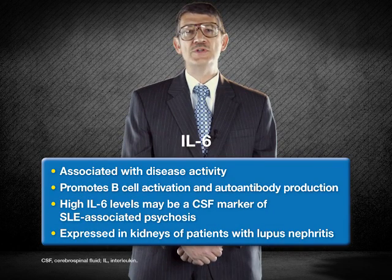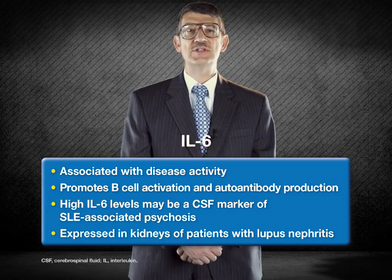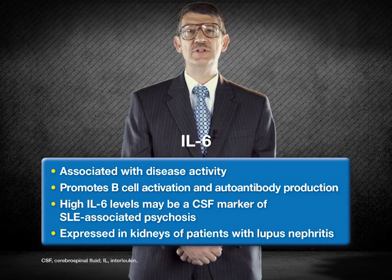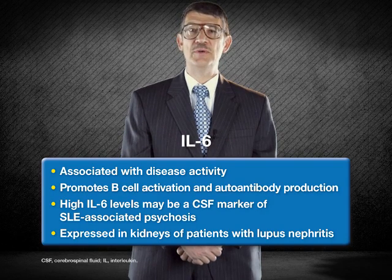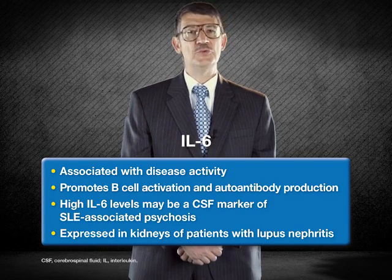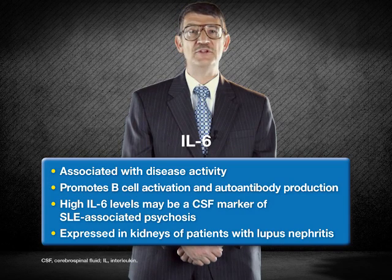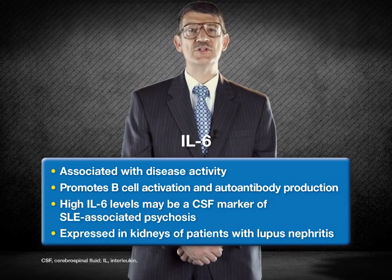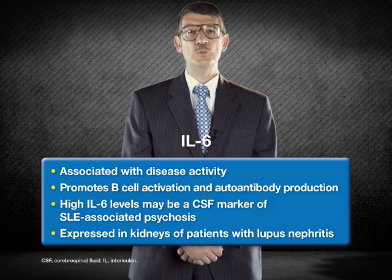Immune cells from patients with lupus also overproduce IL-6, and increased IL-6 levels have been shown to associate with disease activity. IL-6 promotes B cell activation and autoantibody production. Interestingly, high levels of IL-6 in the cerebrospinal fluid of affected patients may provide a marker of lupus-associated psychosis, and IL-6 expression has been detected in the kidneys of patients with lupus nephritis.